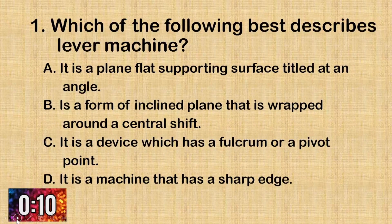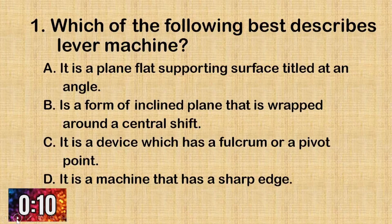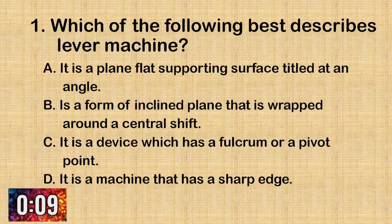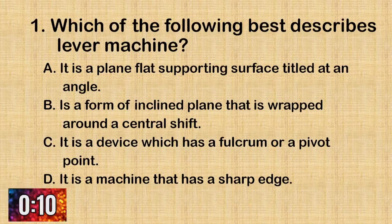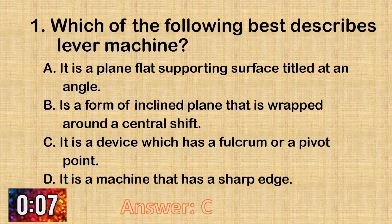Question number one. Which of the following best describes a lever machine? A. It is a plane flat supporting surface tilted at an angle. B. It is a form of inclined plane that is wrapped around a central shaft. C. It is a device which has a fulcrum or a pivot point. D. It is a machine that has a sharp edge. The correct answer is letter C: it is a device which has a fulcrum or a pivot point.